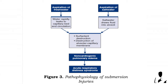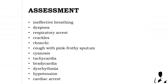Figure three shows the pulmonary effects of salt water and fresh water aspiration. The body attempts to compensate for hypoxia by shunting blood to the lungs, resulting in increased pulmonary pressures and deteriorating respiratory status. More blood is shunted through the alveoli, however the blood is not adequately oxygenated, and worsening hypothermia can result in cerebral injury, edema, and brain death. During assessment you may observe: ineffective breathing, dyspnea, respiratory arrest, crackles, ronchi, cough with pink frothy sputum, cyanosis, tachycardia, bradycardia, dysrhythmia, hypotension, and cardiac arrest.